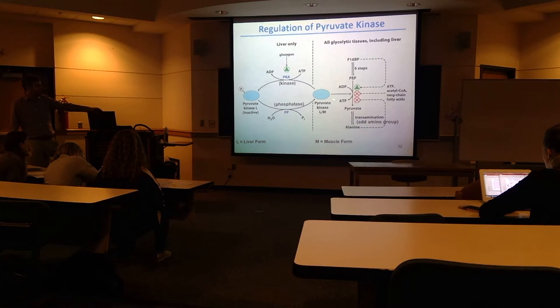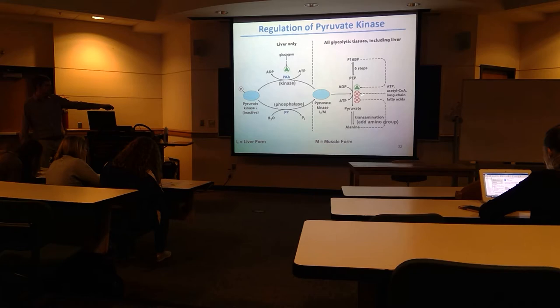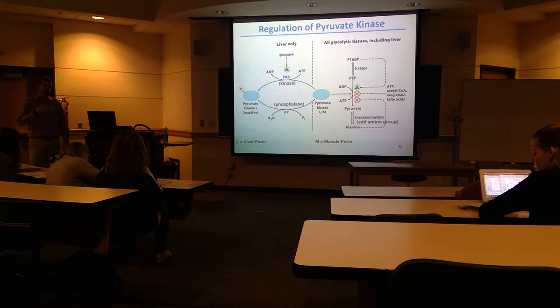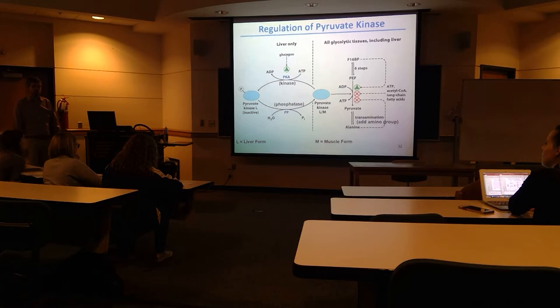The pyruvate kinase in the muscle and other forms are responsive to everything just discussed: ATP, acetyl-CoA, alanine — those things are going to activate or inactivate the muscle and liver forms. The glucagon-responsive phosphorylation is only in the liver, which gives very fine control of glycolysis in the liver compared to other parts of the body.